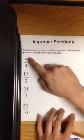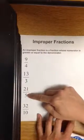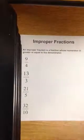For example, 9 is greater than 4, 13 is greater than 3, 21 is greater than 5, and 32 is greater than 10.